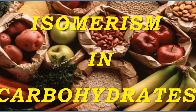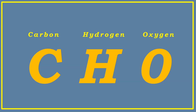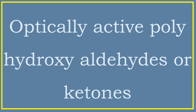Hello dear students, welcome to another session in carbohydrates. I am Dorka Berry, assistant professor in biochemistry. We will discuss today the isomerism in carbohydrates. Carbohydrates are hydrates of carbon containing the elements carbon, hydrogen, and oxygen. They are optically active polyhydroxy aldehydes or ketones. If they contain an aldehyde group they are called aldoses; if they contain a ketone group, those monosaccharides are called ketoses.